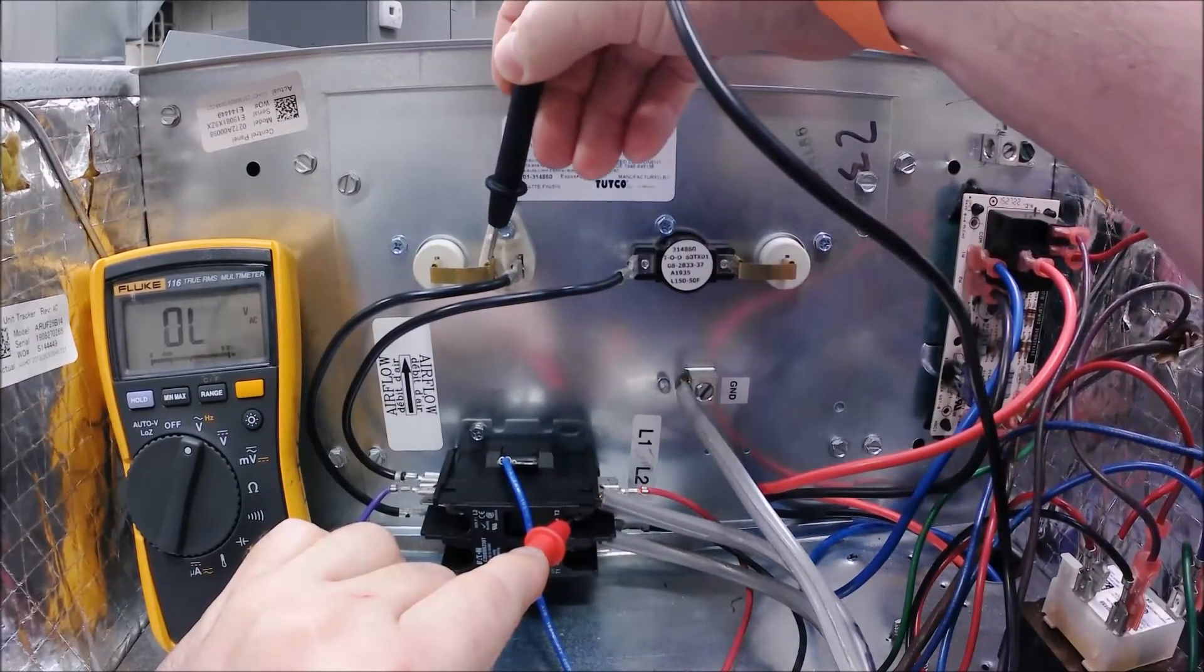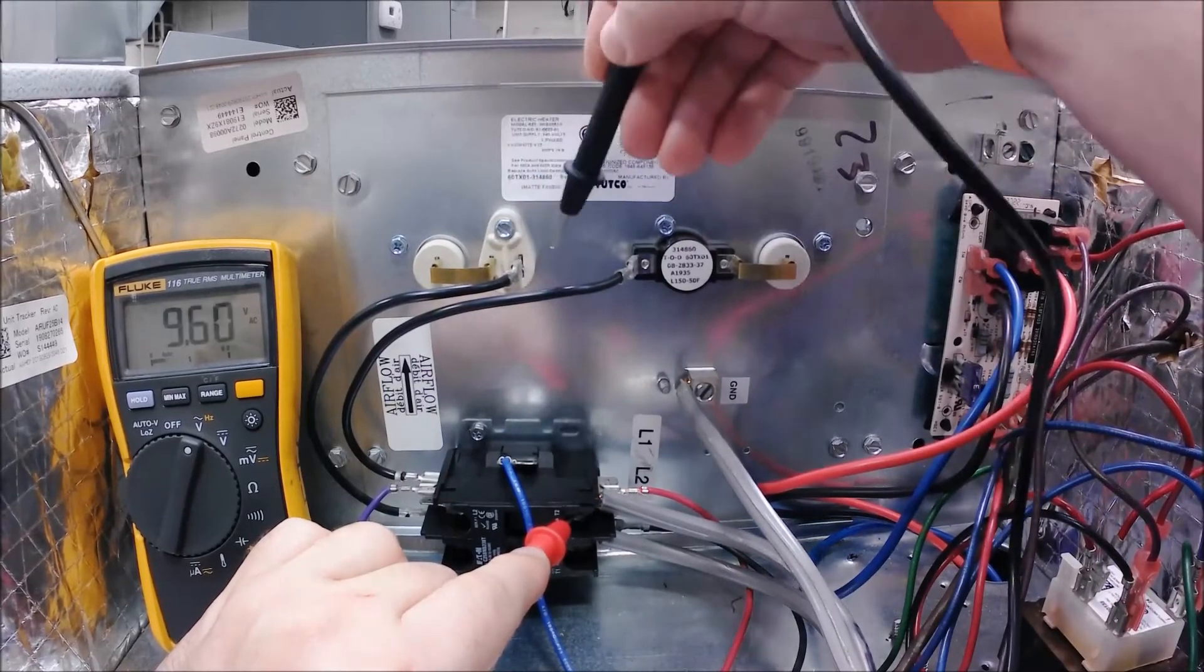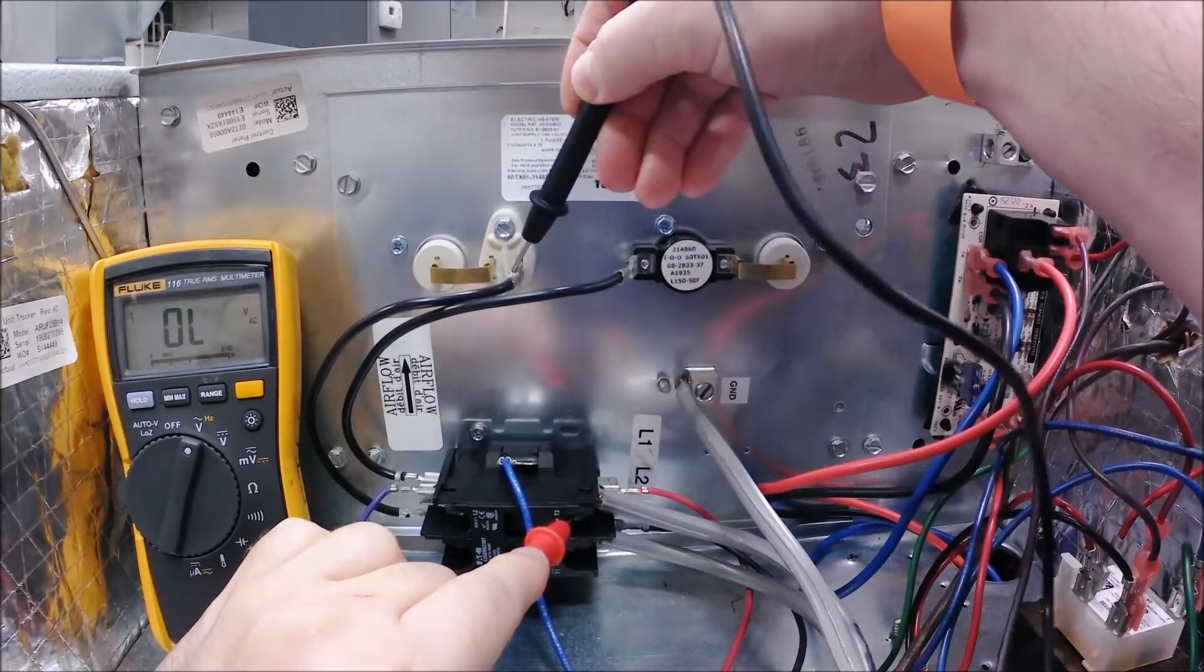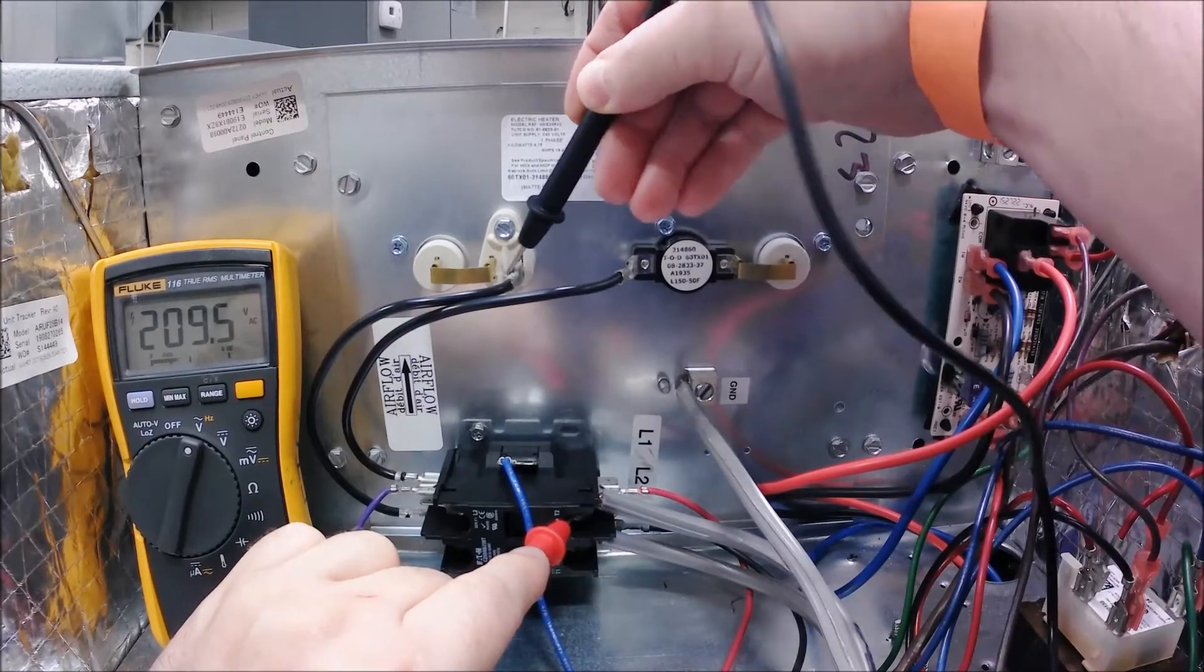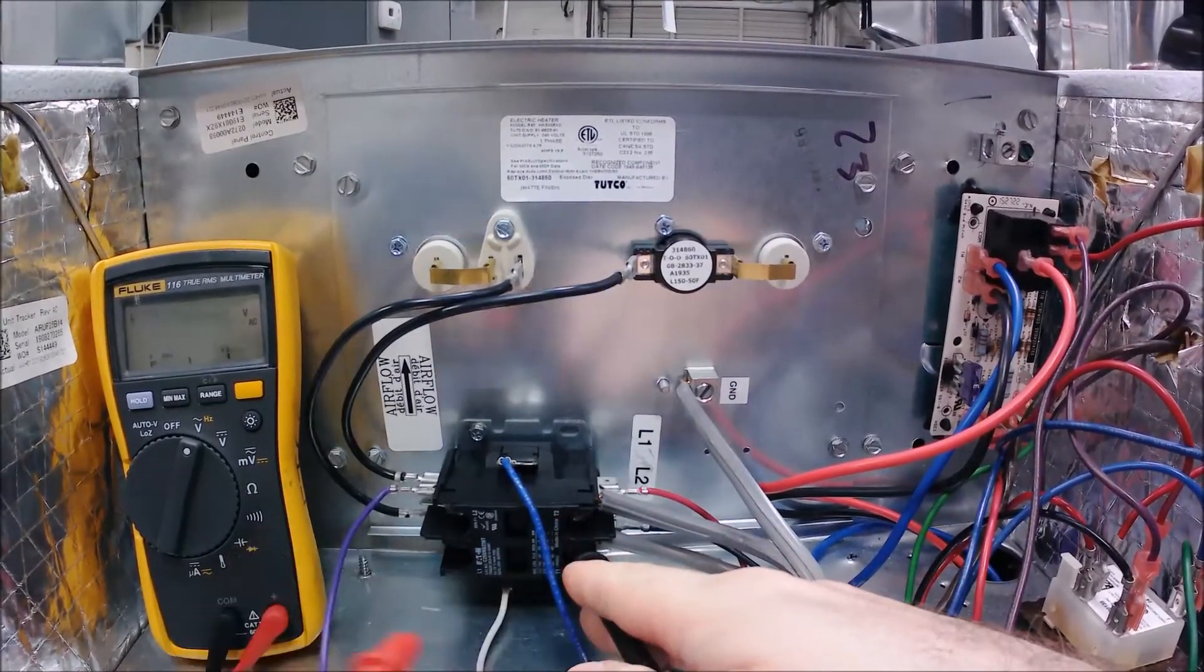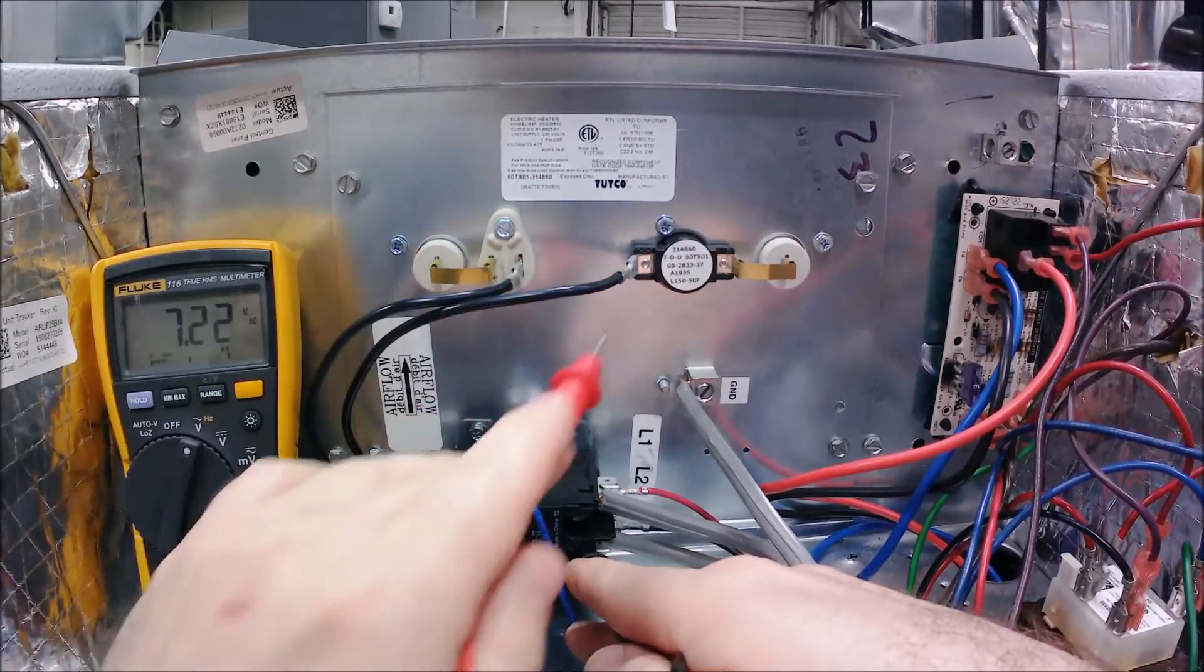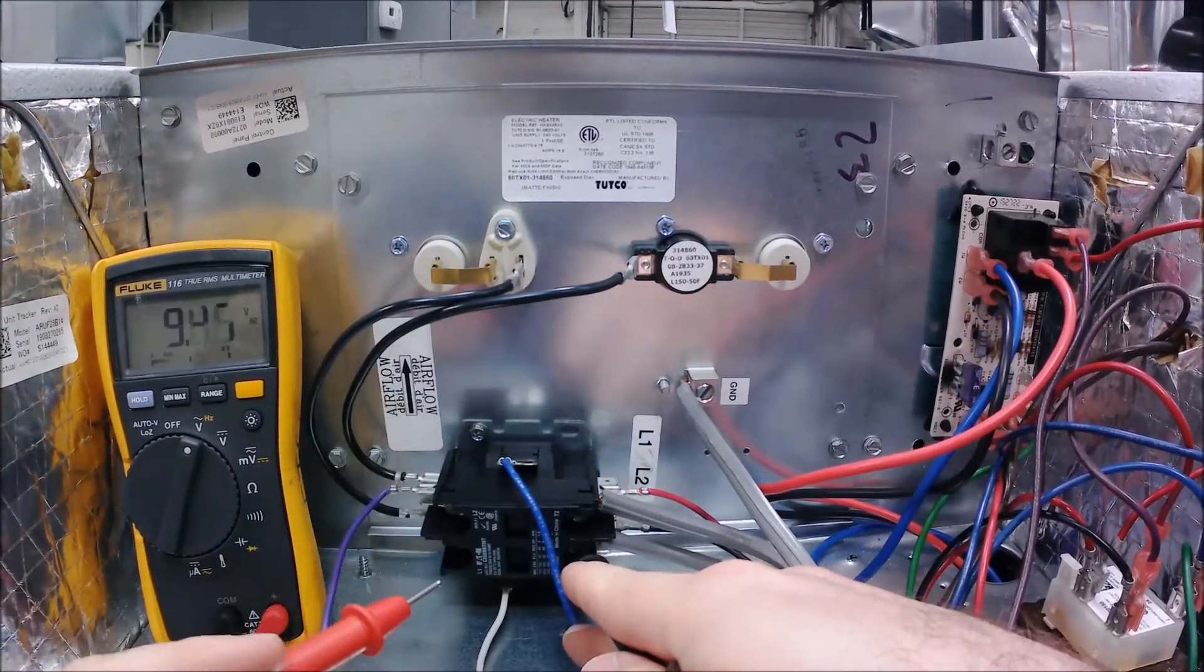This here is power going into my fusible link - 209 volts. I should have that same reading coming out and it is. So in this real simple method of troubleshooting, you leave one lead stationary on one side of power and you follow the other side in and out of safeties up to the point of the load.